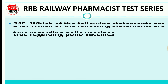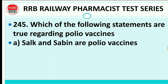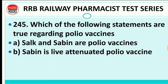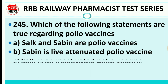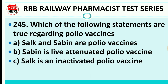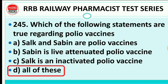Question 245: Which of the following statements are true regarding polio vaccines? (A) Salk and Sabin are polio vaccines. (B) Sabin is a live attenuated polio vaccine. (C) Salk is the inactivated polio vaccine. (D) All of the above. The right answer is D — all of the above.